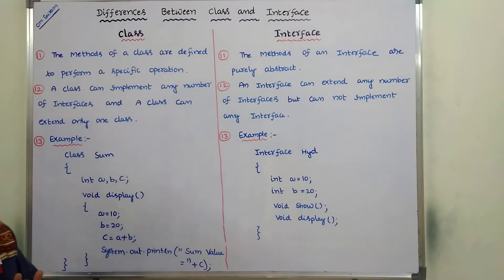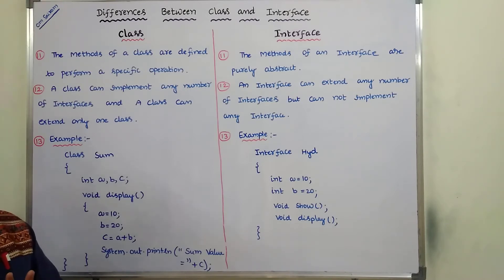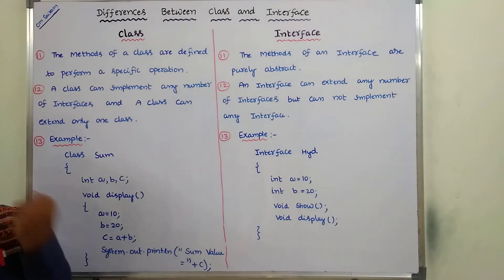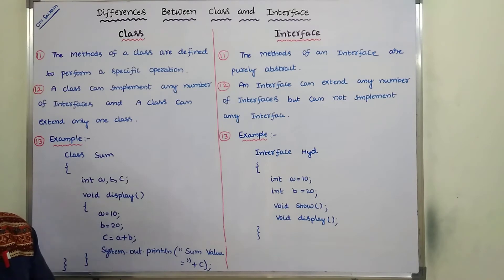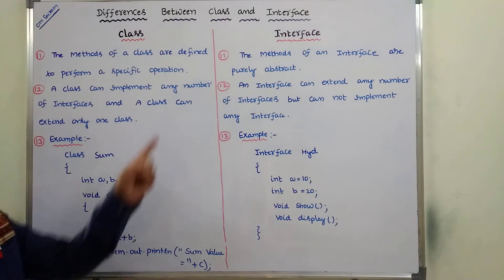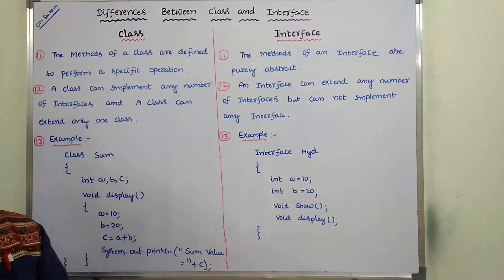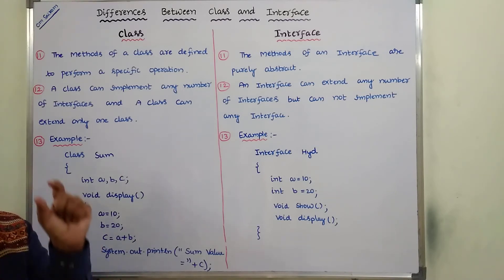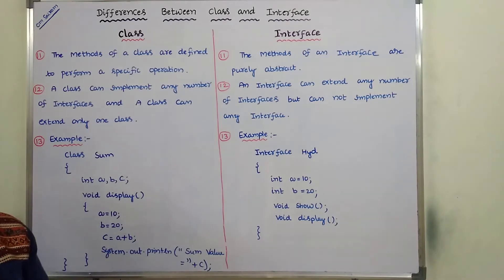Eleventh point: in a class, we have to define concrete methods — a method that contains a block of statements as a body to perform a specific operation. In the case of an interface, an interface can contain only abstract methods, meaning only the method declaration is there but it does not contain any body.